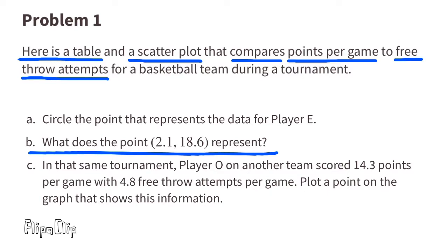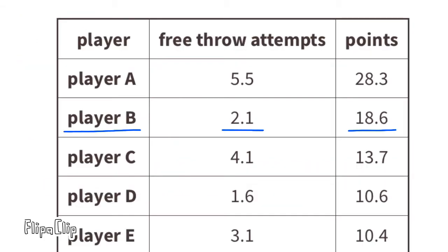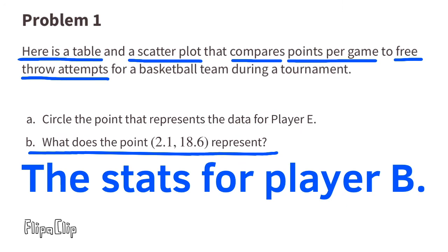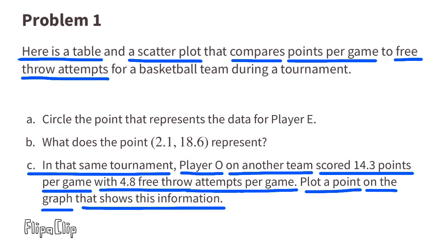Part (b): What does the point (2.1, 18.6) represent? The point 2.1 and 18.6 represents these statistics for Player B.